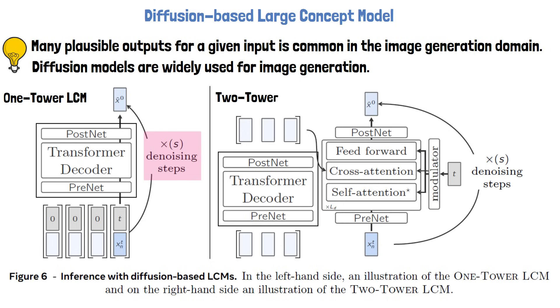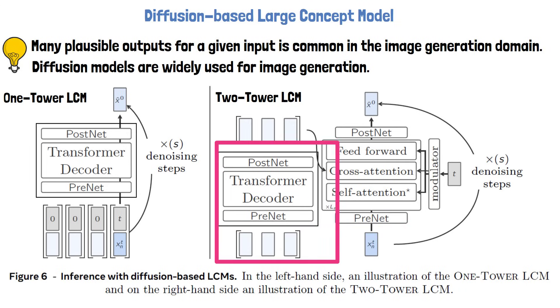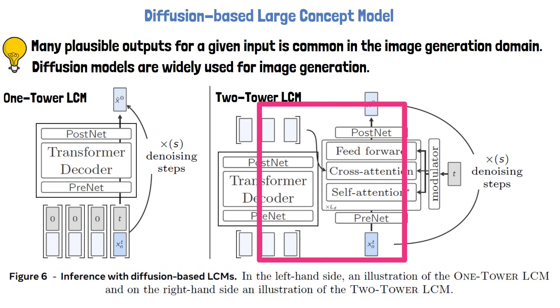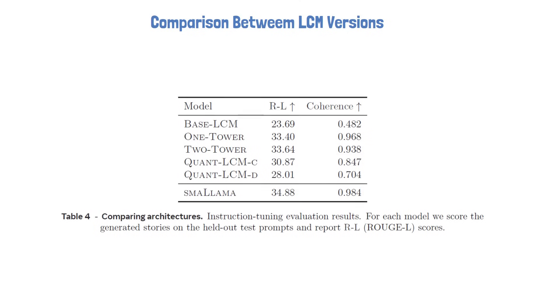The two-tower large concept model separates the encoding of the preceding context from the diffusion of the next concept embedding. The clean concept embeddings are first encoded using a decoder-only transformer. The outputs are then fed to a second model — the denoiser — which also receives the noisy next concept and iteratively denoises it to predict the clean next concept. The denoiser consists of transformer layers with a cross-attention block to attend to the encoded previous concepts.